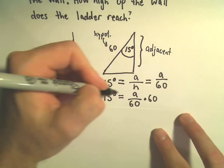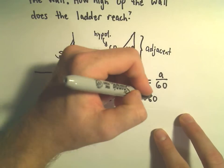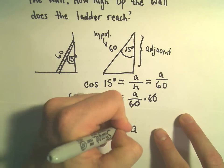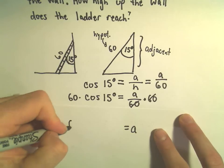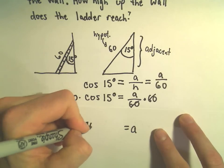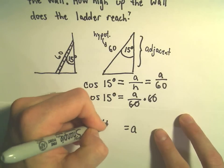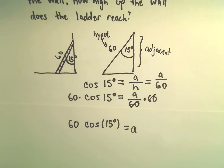So if we multiply by 60 and multiply by 60, the 60s will cancel on the right, and on the left we'll be left with 60 times cosine of 15 degrees.